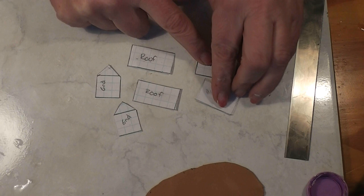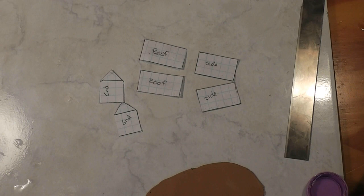But we've got two sides, we've got two ends, and then we've got two roof pieces. And you can play with it on graph paper and see how big you want to make it.